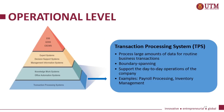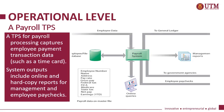At the operational level, we have transaction processing systems. This system processes large amounts of data for routine business transactions. It is boundary-spanning and supports the day-to-day operations of the company. For example, payroll processing and inventory management. An example of a payroll TPS captures employee payment transaction data such as a time card, and the system outputs include online and hard copy reports for management and employee paychecks.